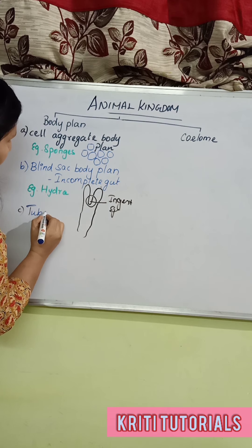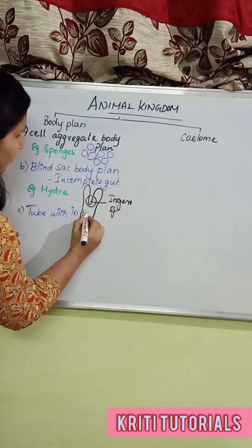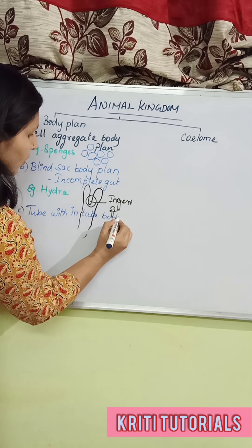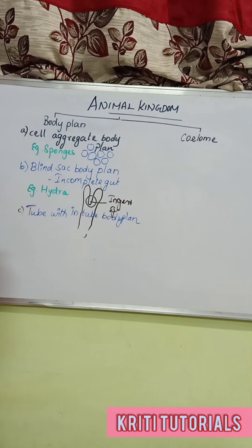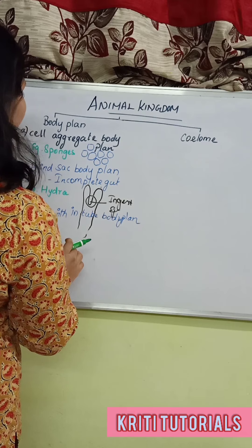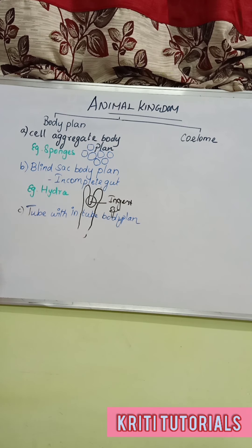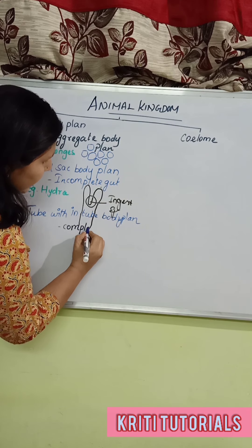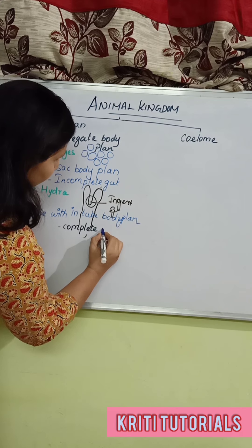The third type is the tube within tube body plan. In the tube within tube body plan, we can see the complete gut.